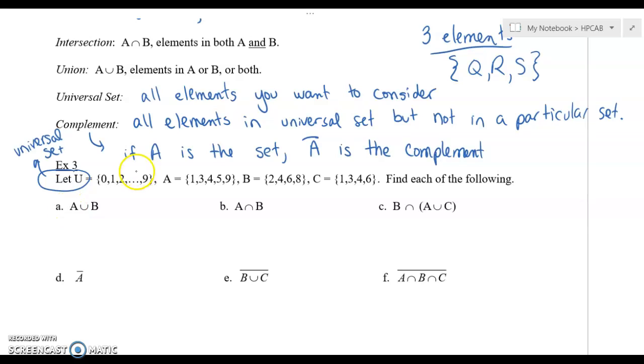A union B is going to be the combination of A and B put all together. And you don't need any duplicates. No duplicates needed. So you don't need to list some number twice. So let's see. We have 1 that's part of A, 2 that's part of B, 3 that's part of A, 4 that's part of both of them. But again, I don't need to list it twice. I've got a 5 in A. So I'm just putting them all together in one list, 6 which is in B, 7 isn't in any of these, 8 and we have a 9. So it's the combination, the union of all of those things put together.